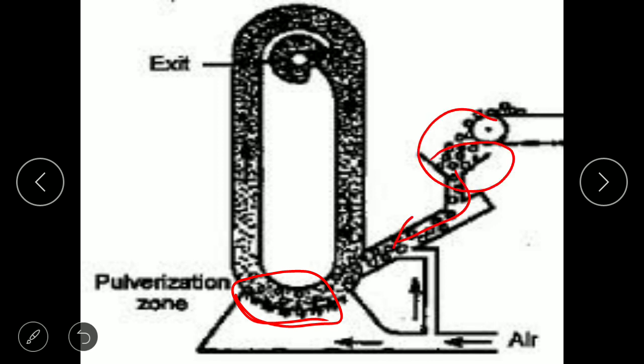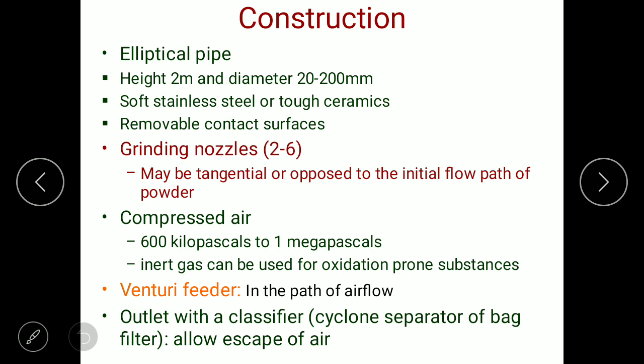This is the hopper through which the solid particles to be reduced in size will enter. They are subjected to the nozzles and, after getting size reduction by a combination of impact and attrition, they are subjected to the cyclone separator and exit from there. Air is entering continuously. The grinding nozzles — two to six in number — may be tangential or opposed to the initial flow path of the powder.